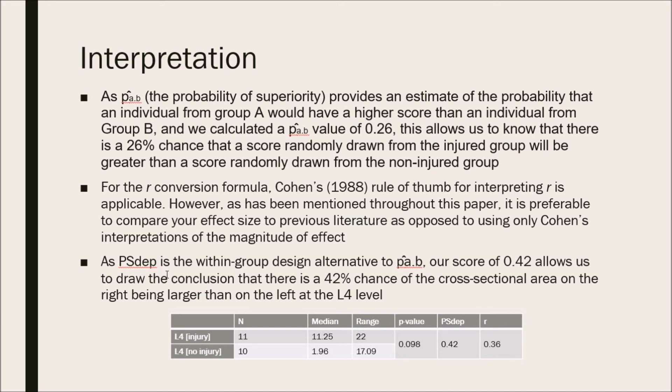Lastly, for PSDEP, as it is with a within-group design alternative to P̂A.B, our score of 0.42 allows us to draw the conclusion that there is a 42% chance of the cross-sectional area of the right side being larger than that of the left side at the L4 multifidus muscle level.